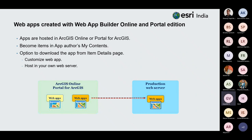Apps created with the Web App Builder online edition are hosted on ArcGIS Online or Portal for ArcGIS and become items in your content section. You can refer to them later, download the app, reuse it, customize it, and host it on your own web server.